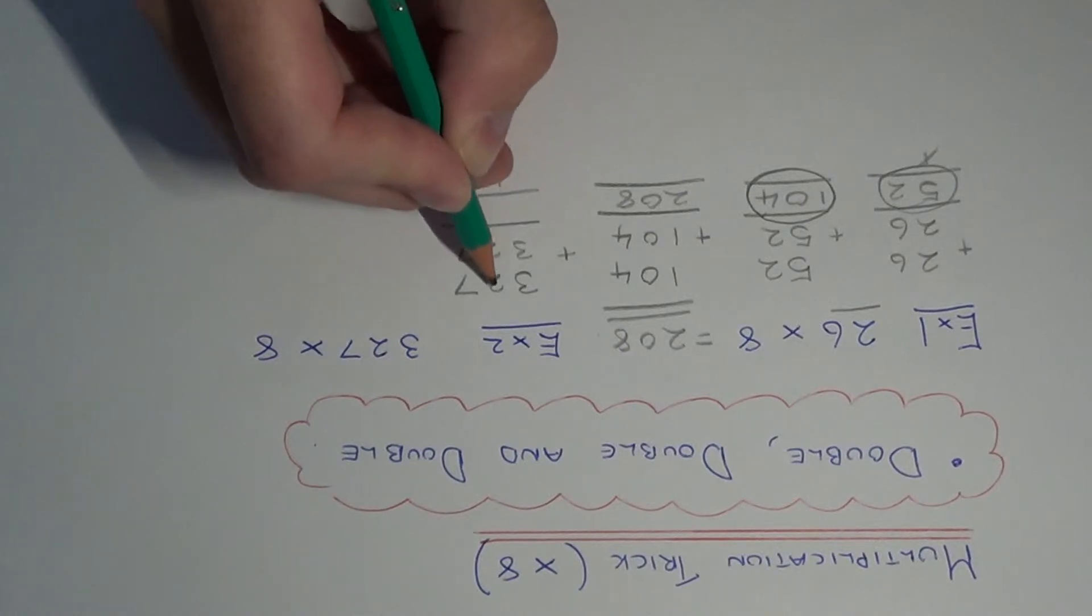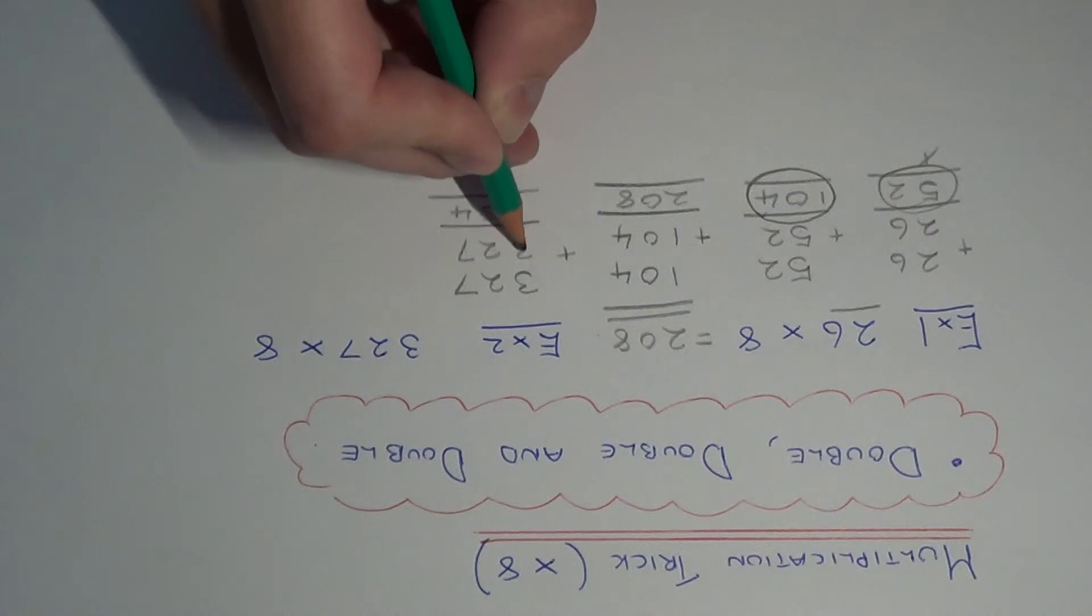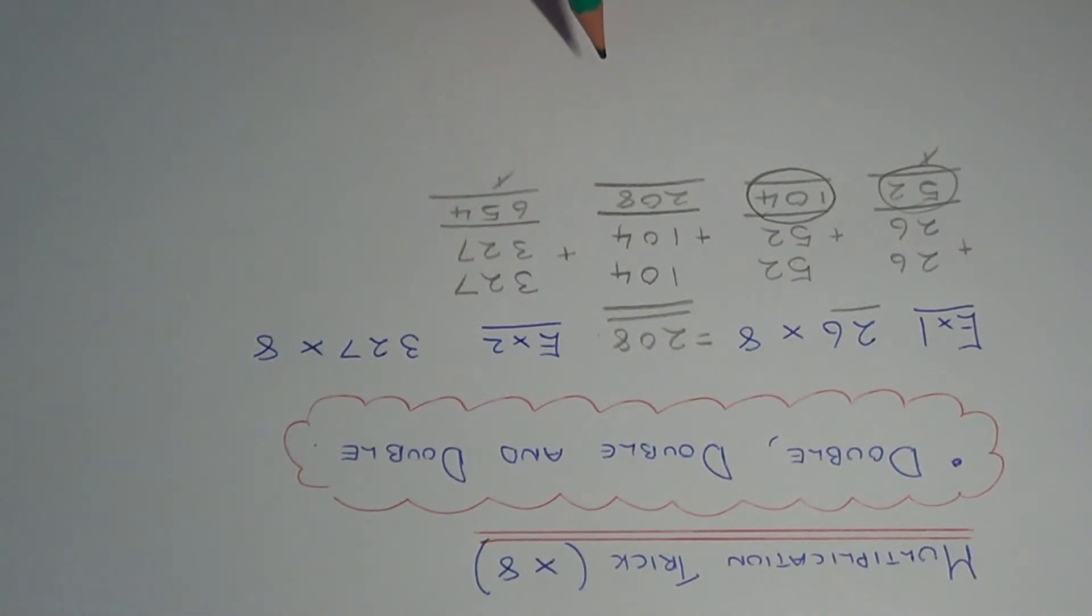7 add 7 is 14, 2 add 2 is 4 plus the 1 is 5, 3 add 3 is 6, so you get 654.